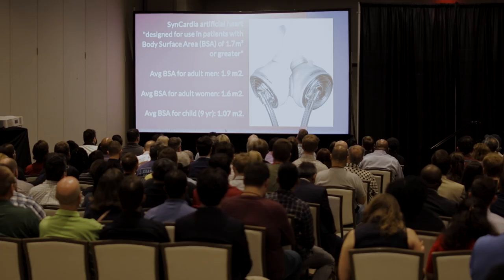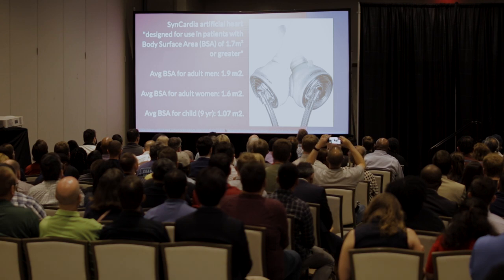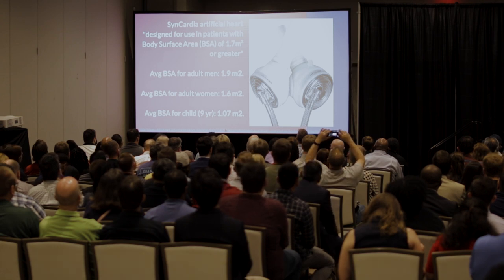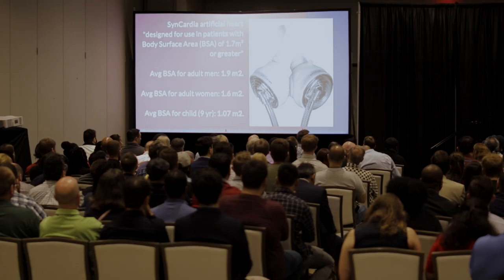In some instances, diversity and designing for diversity is actually a matter of life and death. The SynCardia artificial heart was designed for patients with a body surface area of 1.7 square meters or greater. So unfortunately, for anyone other than the average man, this life-saving heart wasn't designed for them. To their defense, ten years later they did design a smaller heart — but it took ten years to get there.